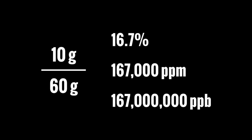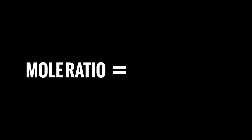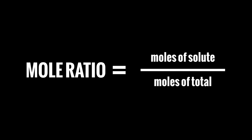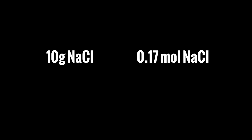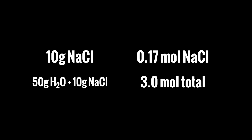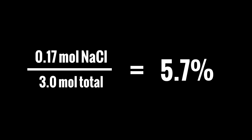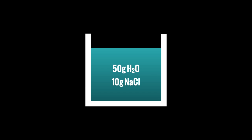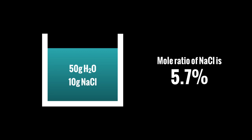Percent composition by mass is easy to calculate, but it doesn't really help when you're looking at reactions. That's why we have the mole ratio, which is equal to the moles of the solute divided by the total moles in the solution. In our original example, 10 grams of NaCl equals 0.17 moles of NaCl. Then 50 grams of H₂O plus 10 grams of NaCl gives us 3.0 total moles of solution. Dividing those, we get 5.7% — so the mole ratio of NaCl in this solution is 5.7%.